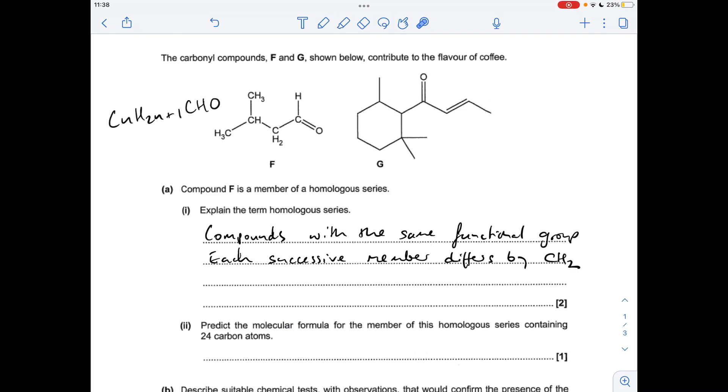For the next part we need to establish the general formula, so it's CNH2N plus 1CHO. So if it's got 24 carbons, written like this would be C23H47CHO, but it wants molecular formula, so we have to just group all the like atoms together. So it would be C24H48O.